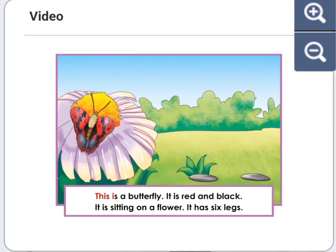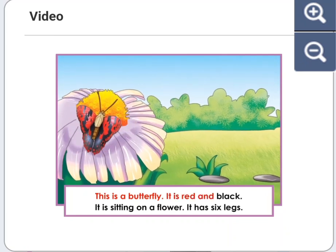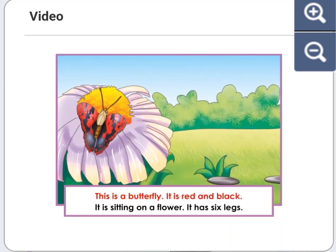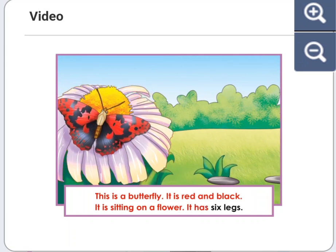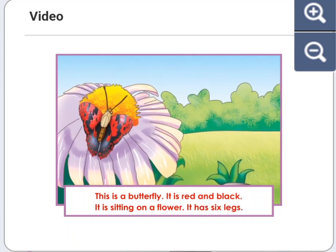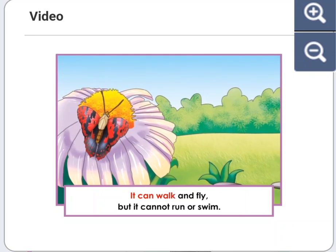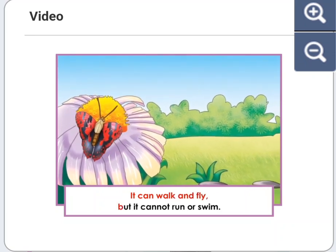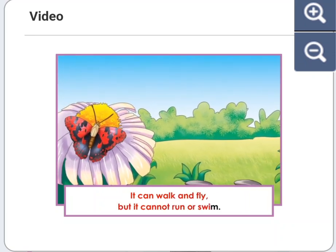This is a butterfly. It is red and black. It is sitting on a flower. It has six legs. It can walk and fly, but it cannot run or swim.